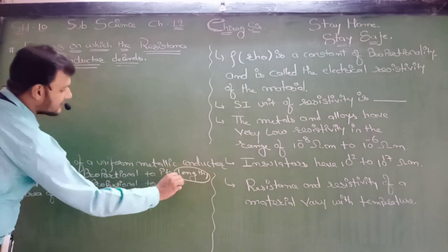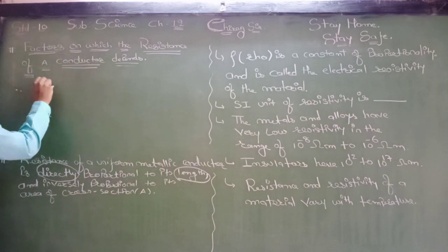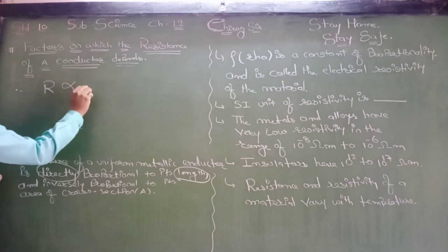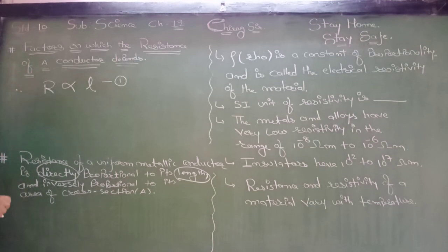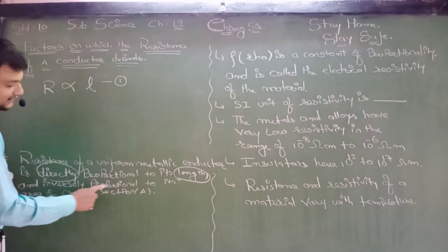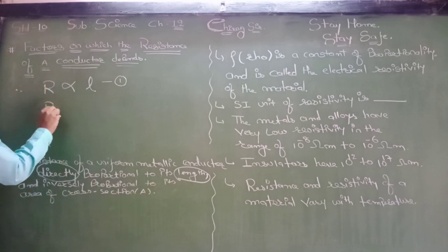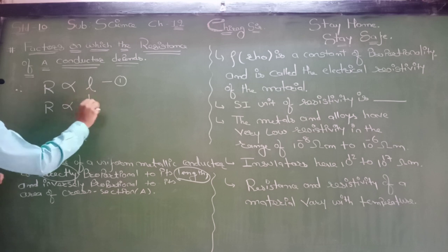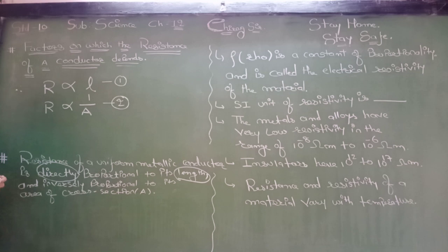So we will write: R is directly proportional to length — equation number 1. And resistance is inversely proportional to its cross-sectional area, so R is inversely proportional to the cross-sectional area. I hope dear students you are able to understand from these two lines.